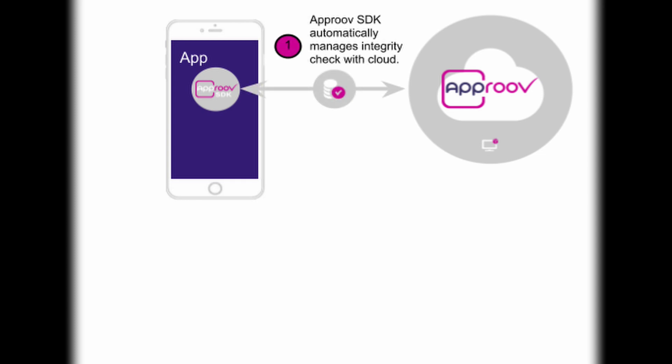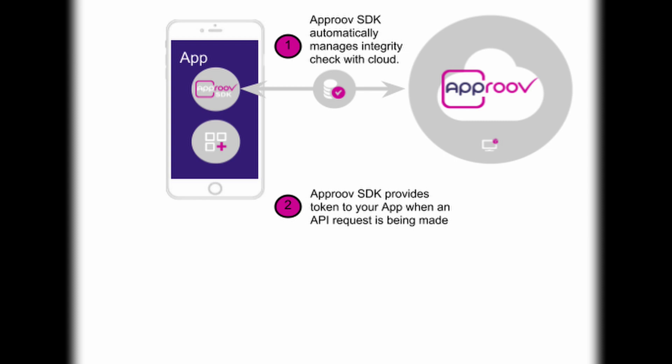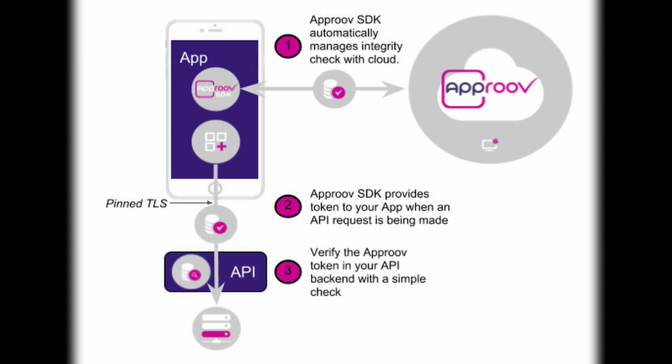When your app makes an API call, the SDK samples various dynamic properties of the app and sends the results securely to our servers. If the app matches the registered one and is secure from snooping tools, Approve issues a signed, short-lived token back to the app. Your app then sends this as part of an API request, where a simple, cheap test can verify the token establishing trust in the app. Approve will resample various dynamic properties of the app periodically, without affecting user experience, to ensure the authentication information is kept up-to-date and your API is protected.